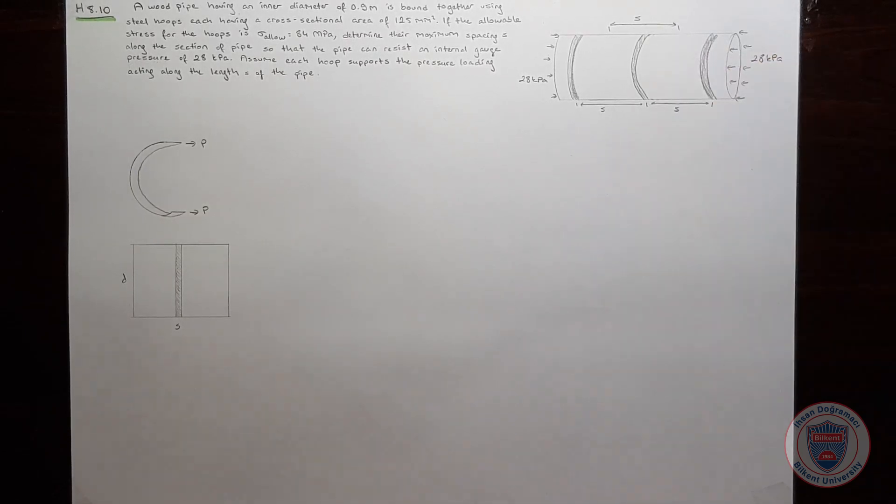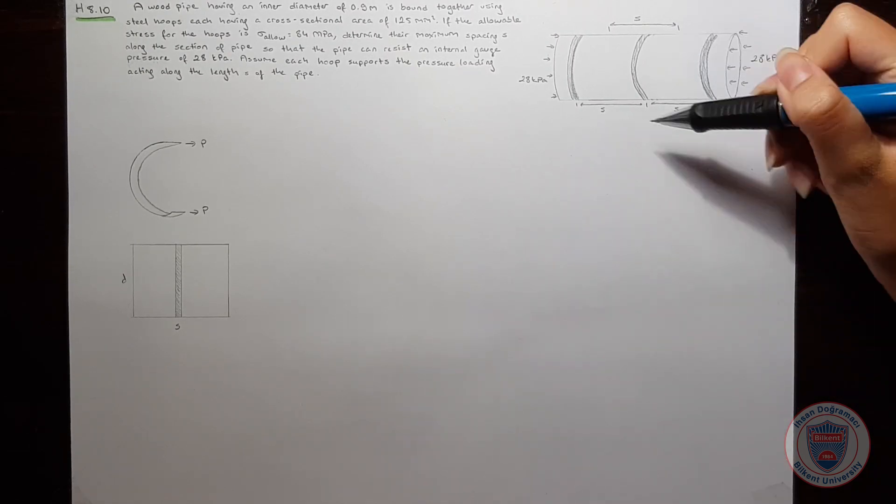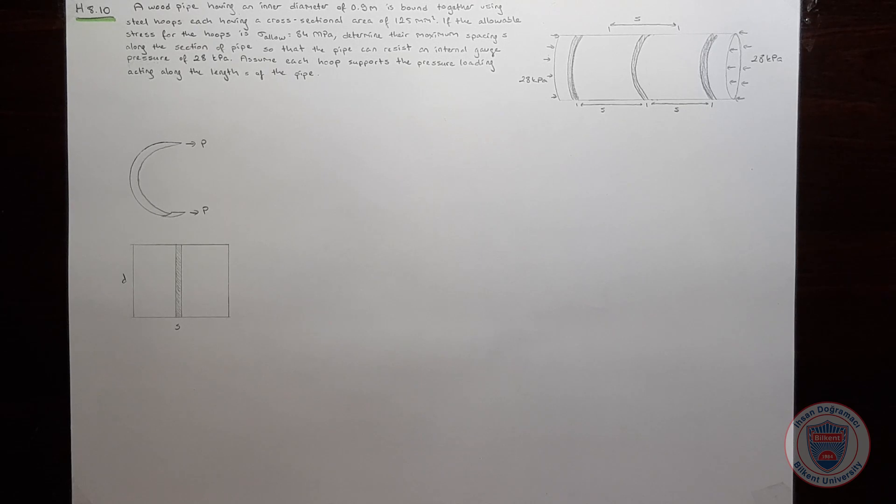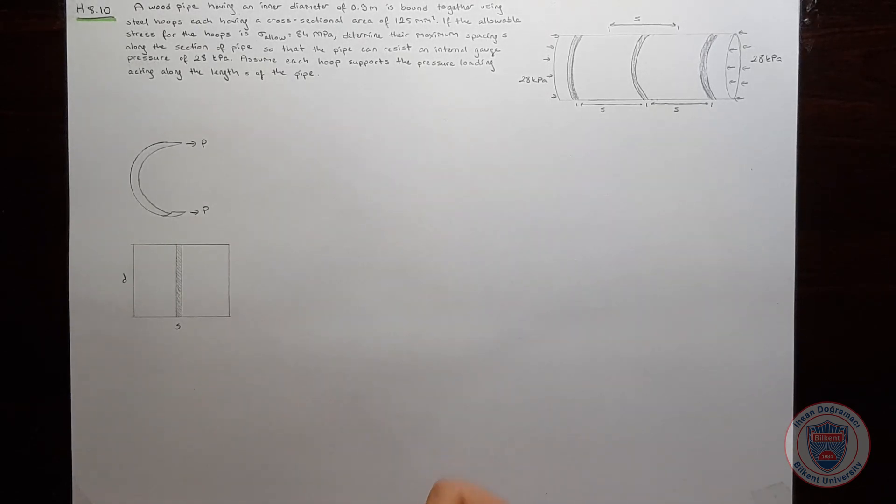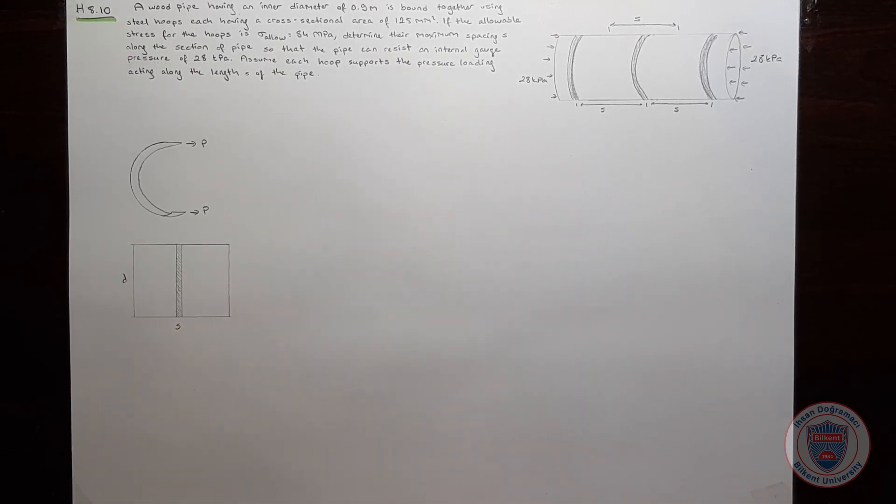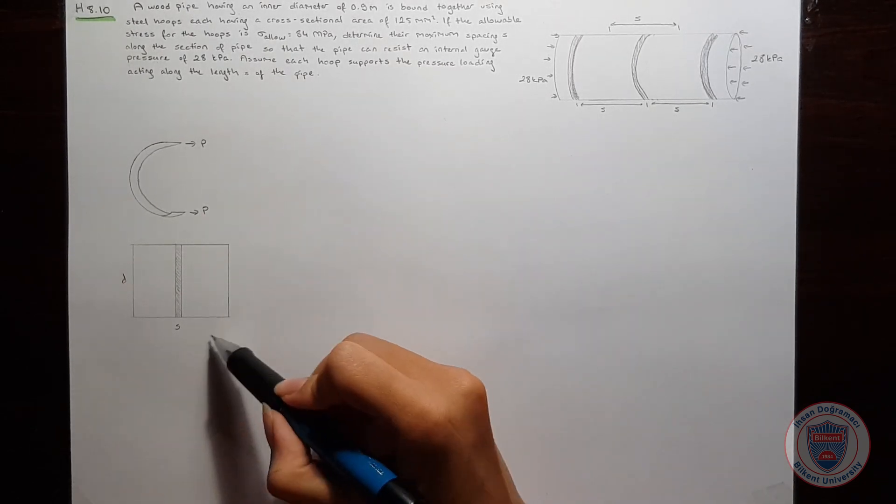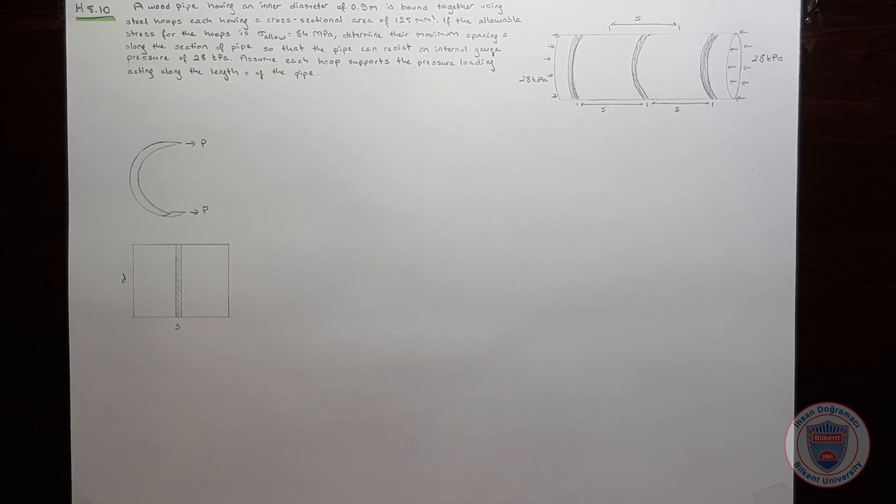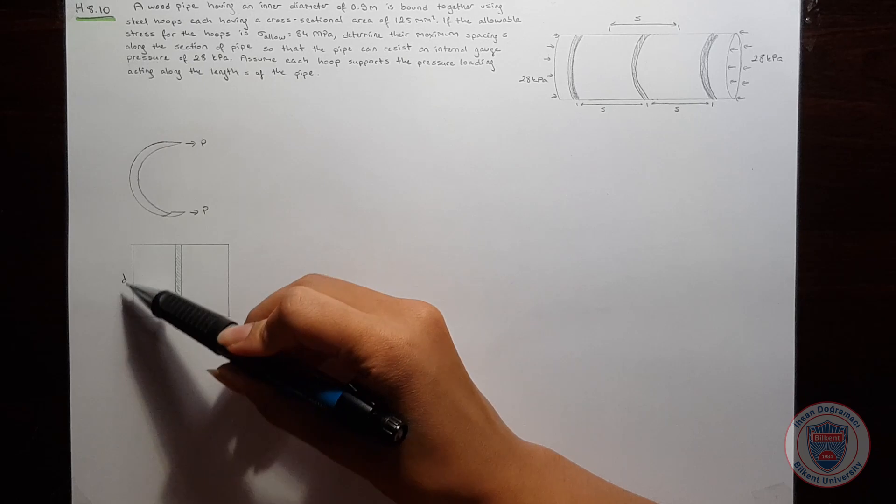Since the hoops support the pressure loading along length S, each hoop must resist a force applied to an area of D times S. You can see the steel hoop here spanning length S, and pressure will cause a force in this area.